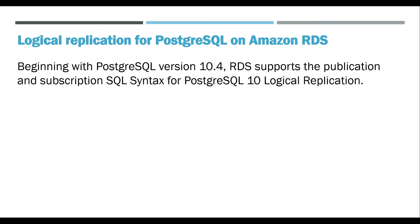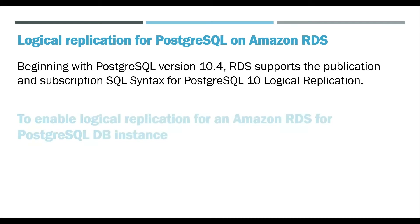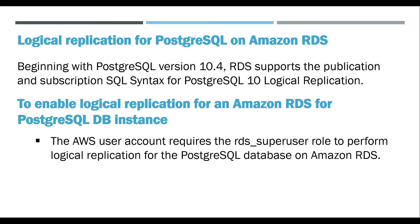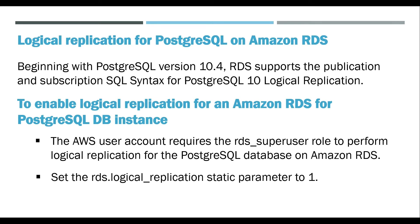Beginning with PostgreSQL version 10.4, RDS supports the publication and subscription SQL syntax for PostgreSQL 10 Logical Replication. To enable logical replication for an Amazon RDS for PostgreSQL DB instance, the AWS user account requires the rds_superuser role to perform logical replication for the PostgreSQL database on Amazon RDS. Set the rds.logical_replication static parameter to one.